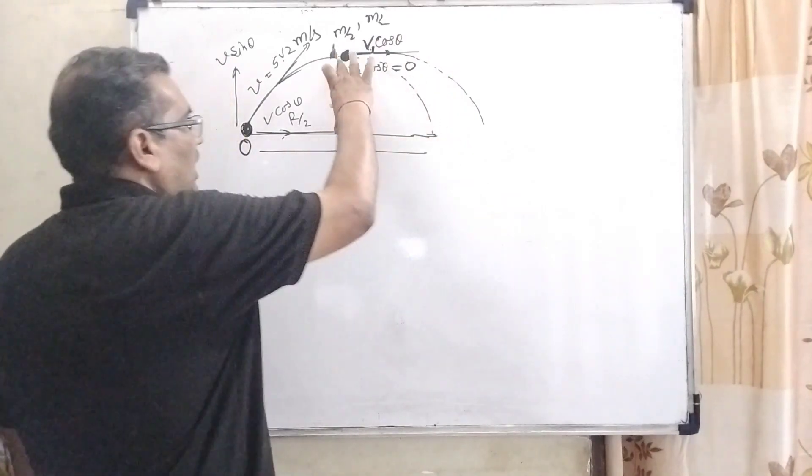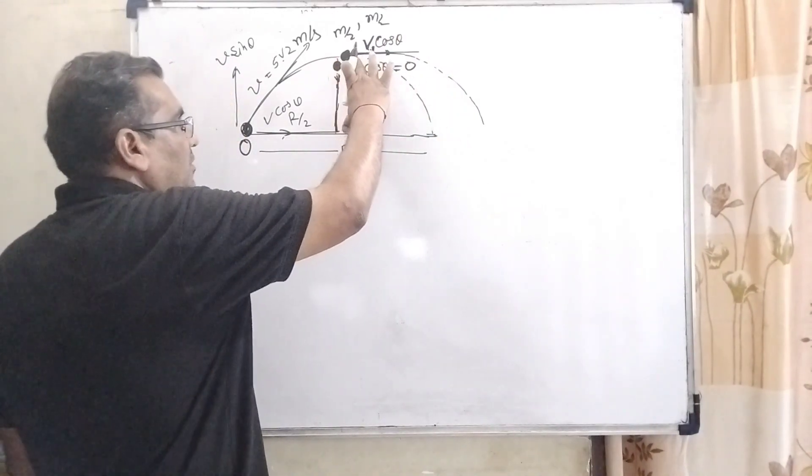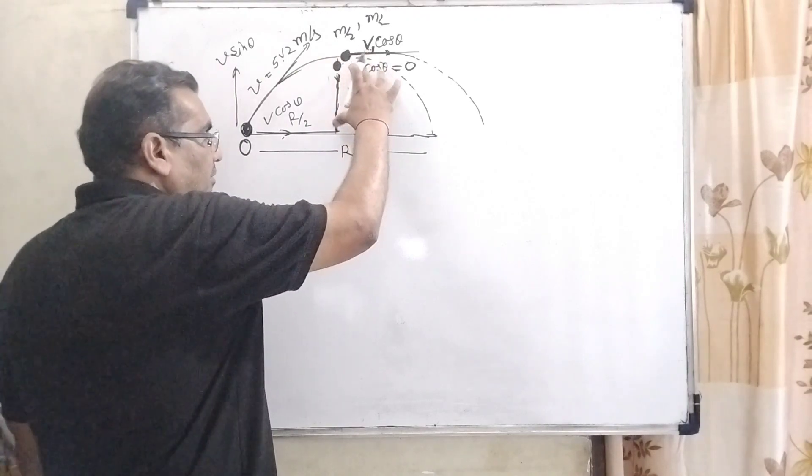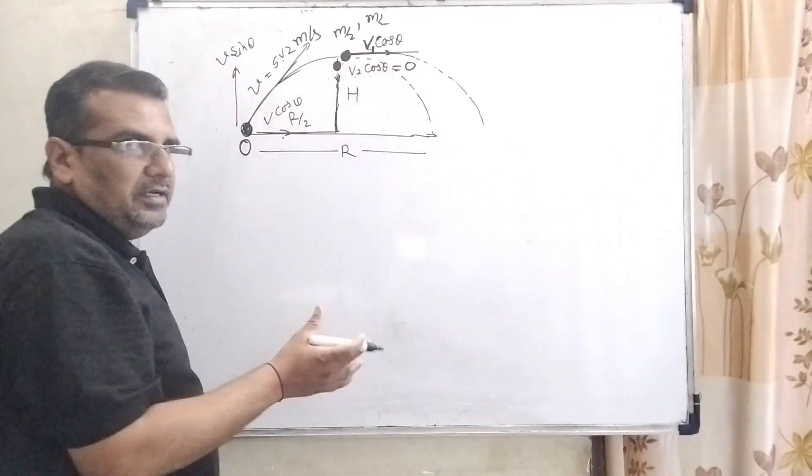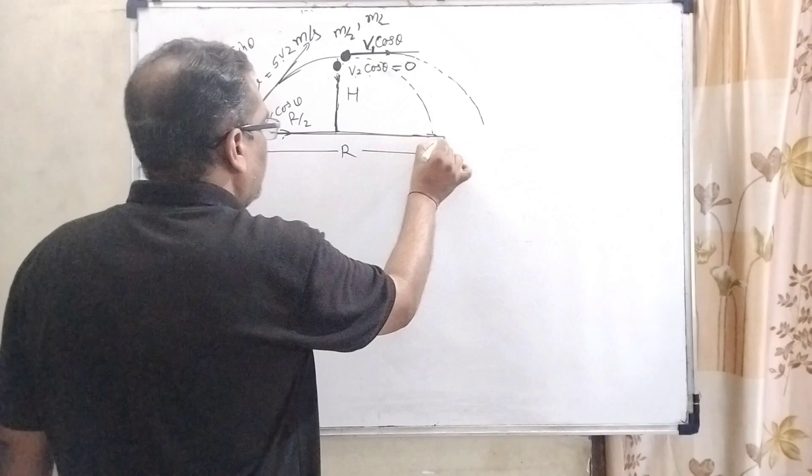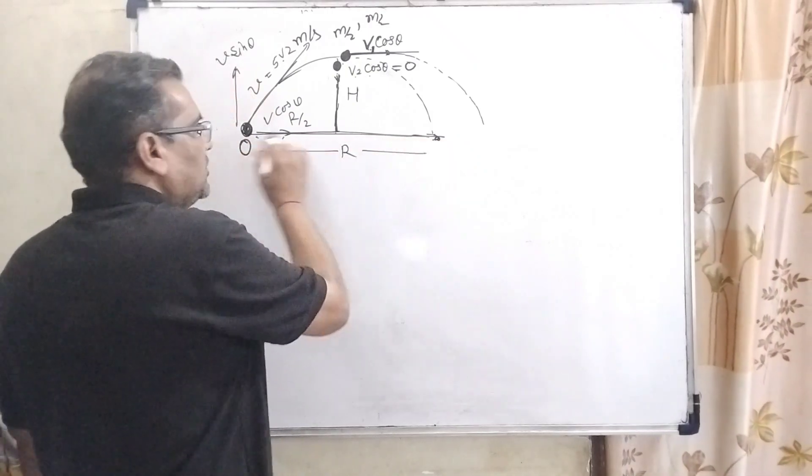So here we have to find the maximum height which is attained and time taken for falling down, means time of flight. And second thing, we have to find out the total distance from point O.